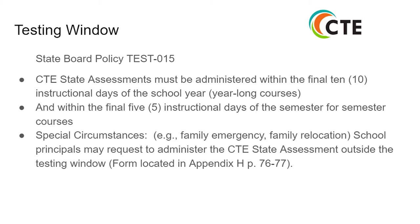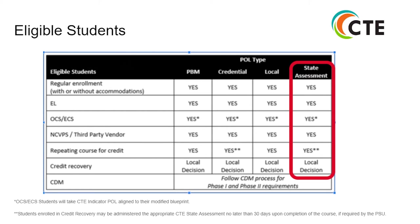The request form is located in Appendix H, pages 76 through 77. All students eligible for state testing are noted in the graph. OCS and ECS students will take CTE indicator POLs aligned to their modified blueprint. Students enrolled in credit recovery may be administered the appropriate CTE state assessment no later than 30 days upon completion of the course, if required by the PSU.